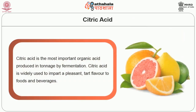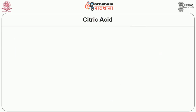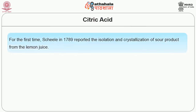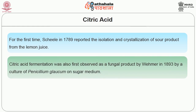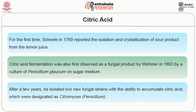Now let's move on to citric acid. Citric acid is the most important organic acid produced in large tonnage by fermentation, and is widely used to impart a pleasant tart flavor to foods and beverages. For the first time, Scheele in 1789 reported the isolation and crystallization of a sour product from lemon juice. Citric acid fermentation was first observed as a fungal product by Wehmer in 1893 from a culture of Penicillium glaucum on sugar medium. After a few years he isolated two new fungal strains with the ability to accumulate citric acid, designated as Citromyces, now called Penicillium.